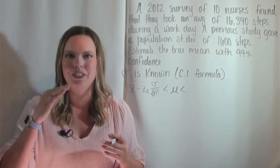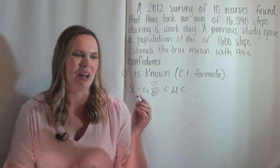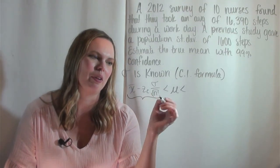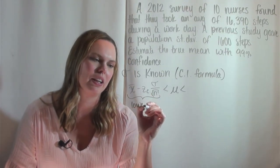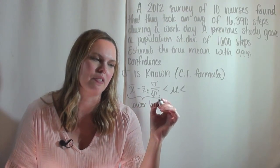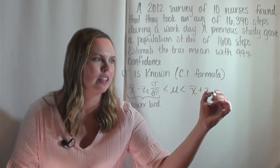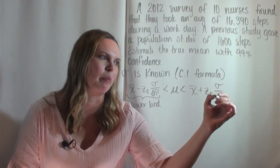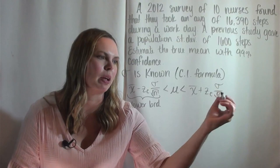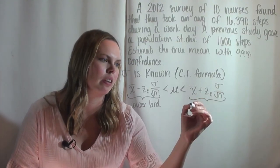And then sometimes you're going to be asked for a lower boundary and an upper boundary. And so this would be your lower boundary, and this would be your upper boundary on mu.